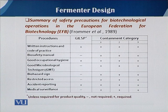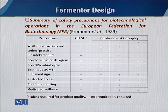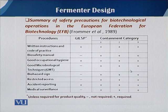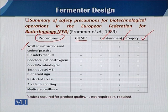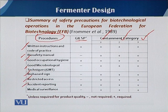Once we know our process organisms and their containment level, we follow the criteria reported by the European Federation of Biotechnology (EFB), first reported by Frommer et al., 1989. He designed a table clearly mentioning the different procedures to follow in each category — 0, 1, 2, and 3. These procedures include written instructions and codes of practice, biosafety manuals, good occupational hygiene, good microbiological techniques, biohazard signs, restricted access, and accident reporting. A positive sign means the measure is required; a negative sign means it is not required.